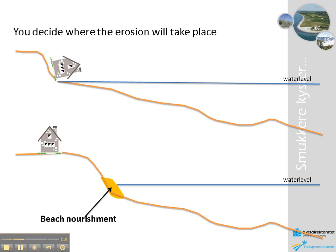By using beach nourishment as coastal erosion protection, you decide where the erosion takes place. But what will happen to the eroded beach nourishment sand? Well, let's have a look.